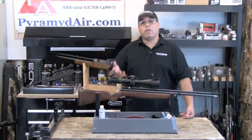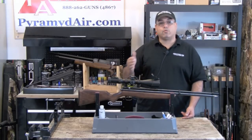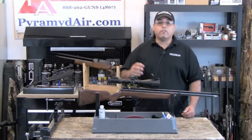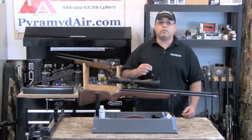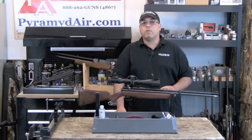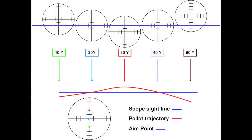Step 3: Make a note as to which mil dot is closest to the point of impact at each range. For example, at 10 yards, you may be closest to the second mil dot below the center point of your scope — represented by the green dot on our scope image. Continue the above process until you're satisfied that you have good, consistent point of impact data at each range. On our example, you're going to see the following: a green dot represents the impact at 10 yards, which is two dots low; a blue dot represents the impact at 20 yards, which is dead center; a red dot represents the impact at 30 yards, which is two dots high; a purple dot represents the impact at 40 yards, which is back to dead center due to pellet drop; and at 50 yards, there's a brown dot, and it impacts at three dots low.